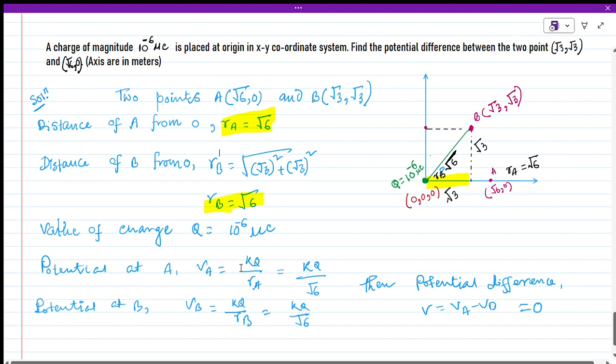In this question we see that rA = rB, then the potential at VB and VA will be equal in magnitude. If we find the difference between these two potentials, then we get VA - VB = 0.